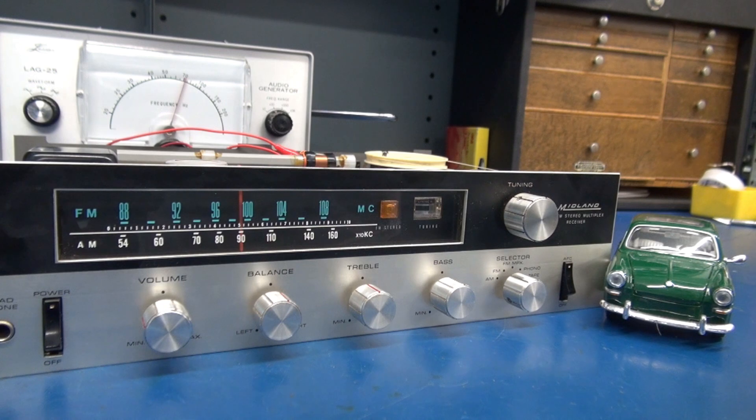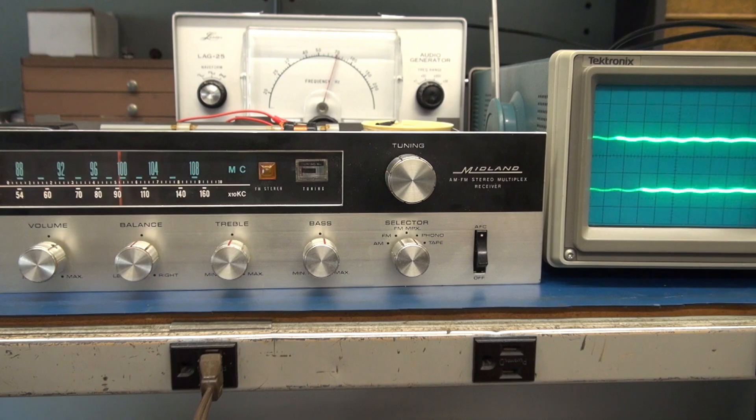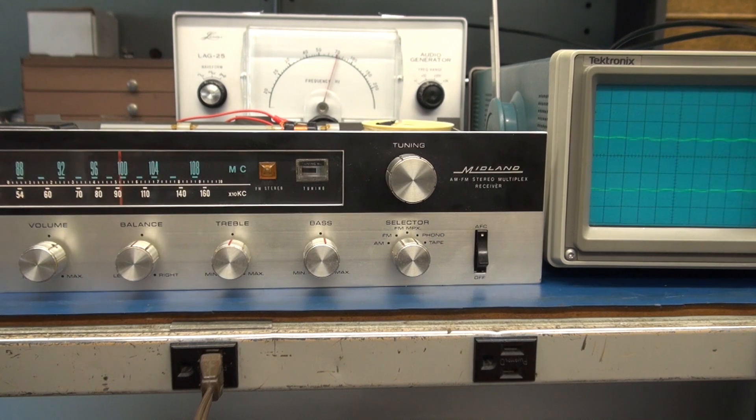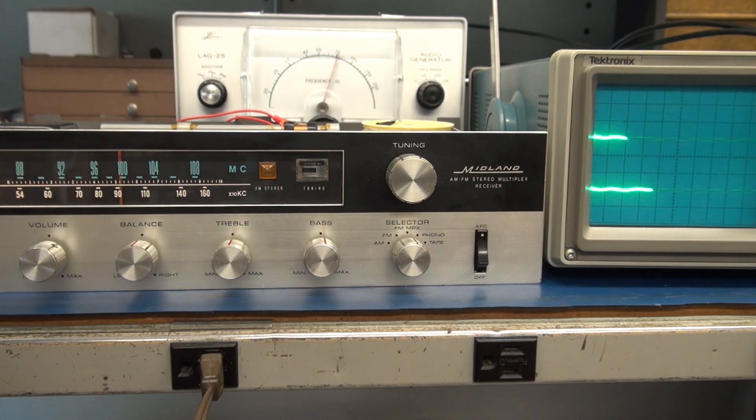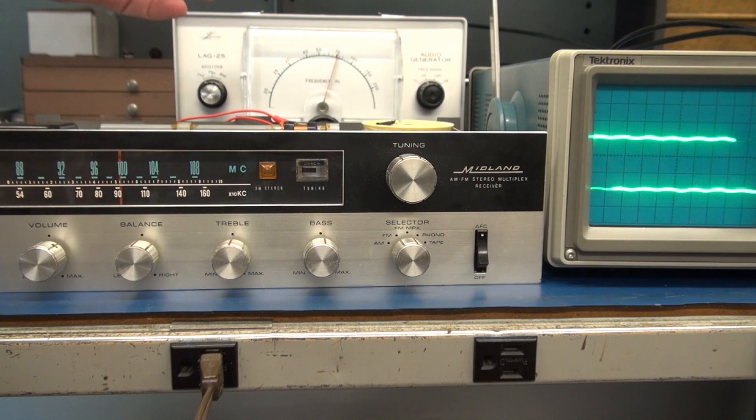The following video is repair of a weak left channel on the Midland Model 19-548 receiver. Here's the initial test before repair of the Midland. Got an oscilloscope monitoring the speaker output with those 10 ohm dummy loads installed.